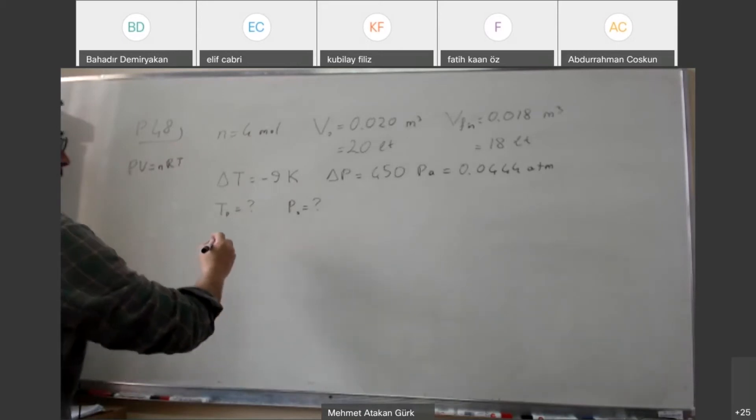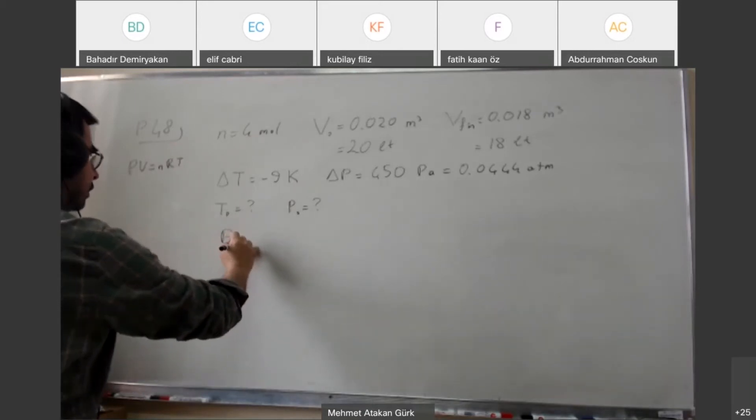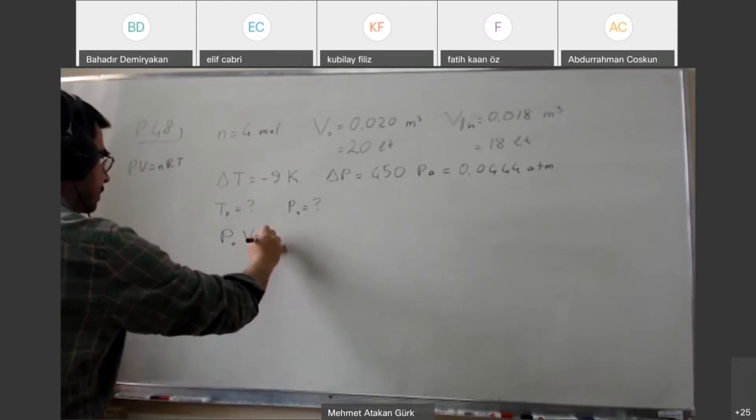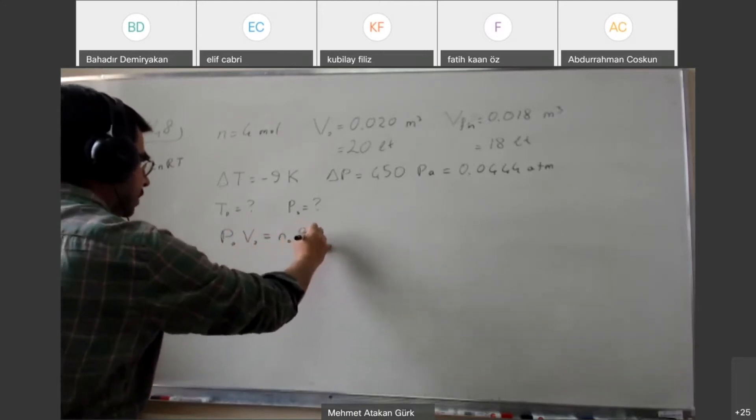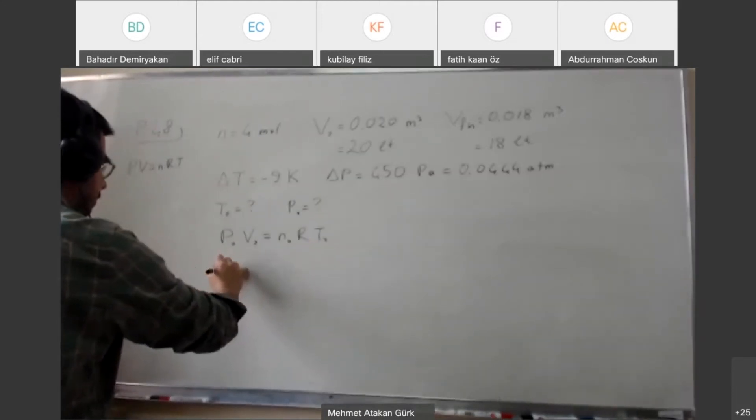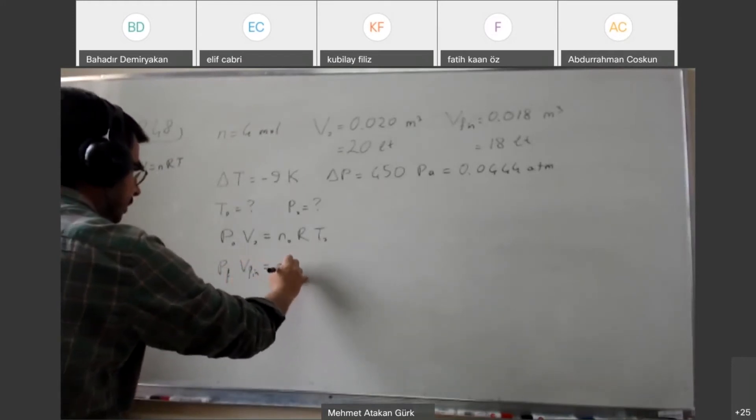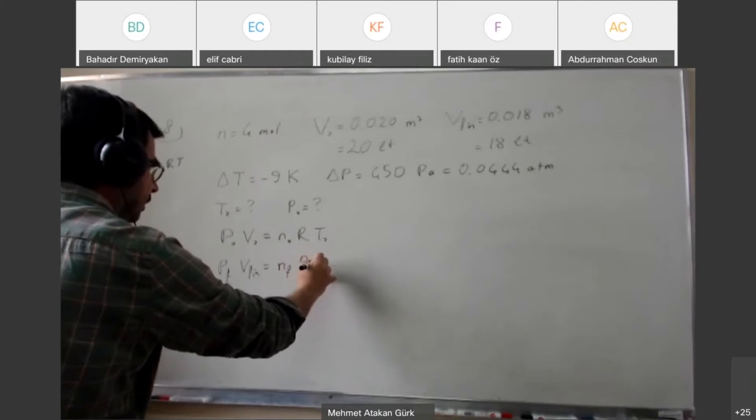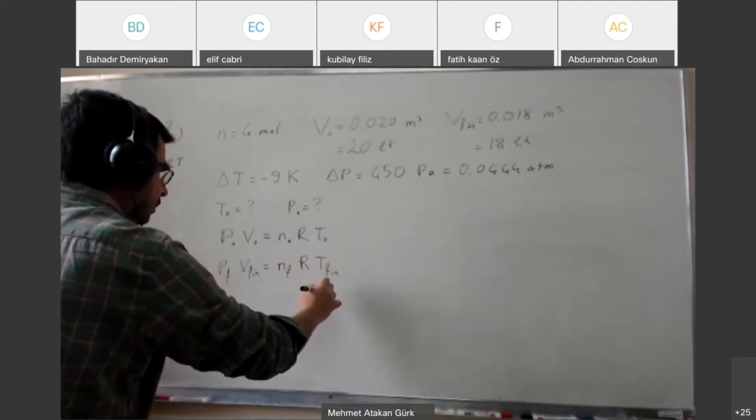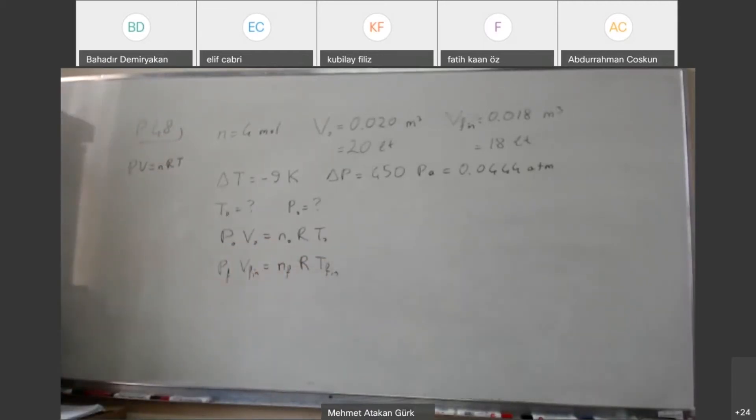We are going to have P0 V0 equals n0 R T0. P final V final is n final R T final. So n0 is equal to n final because this is a sealed container, right? No gas leaves or enters.